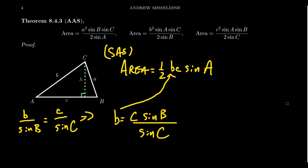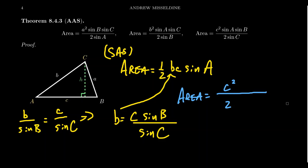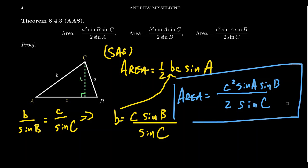We insert this expression for B into the area formula. Area equals one half times (c sine B over sine C) times c times sine A. Since we already have a c, we get c squared. Writing this as one big fraction, we get c squared times sine A times sine B in the numerator, over two times sine C in the denominator. So the derived formula is: area equals c squared sine A sine B over two sine C.